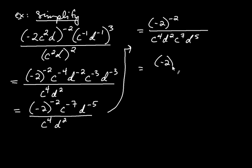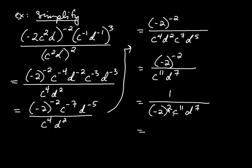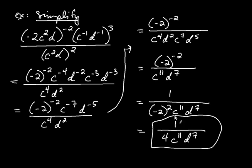Combining in the denominator gives c to the eleventh and d to the seventh. Finally, I deal with negative 2 to the negative second: bringing it down leaves a 1 in the numerator, giving 1 over negative 2 to the positive second times c to the eleventh times d to the seventh. The base stays negative 2 — only the exponent changes sign. Negative 2 squared is 4, so the final answer is 1 over 4 c to the eleventh d to the seventh.